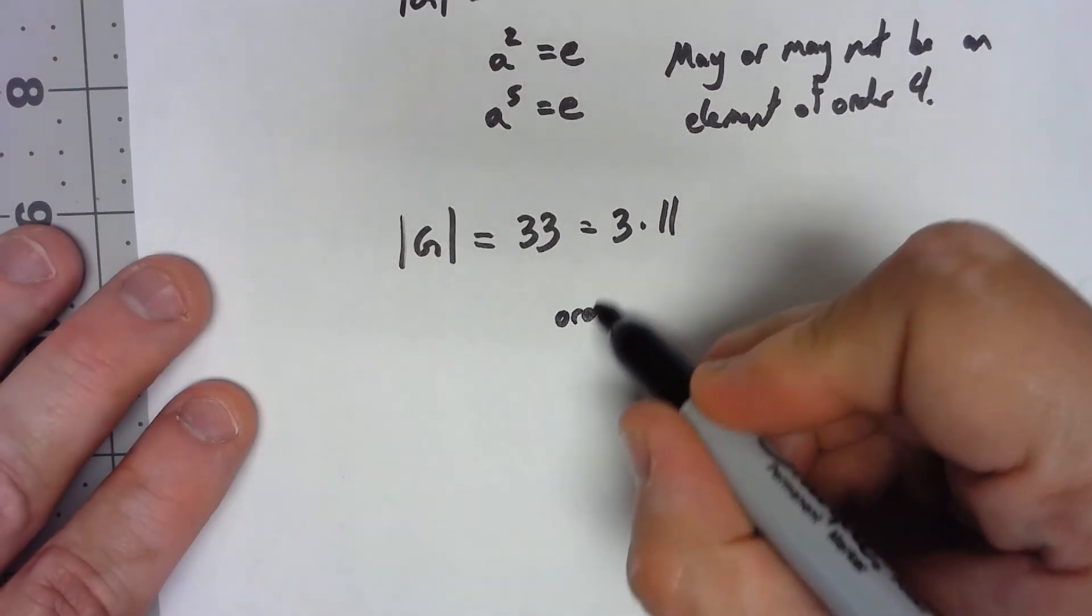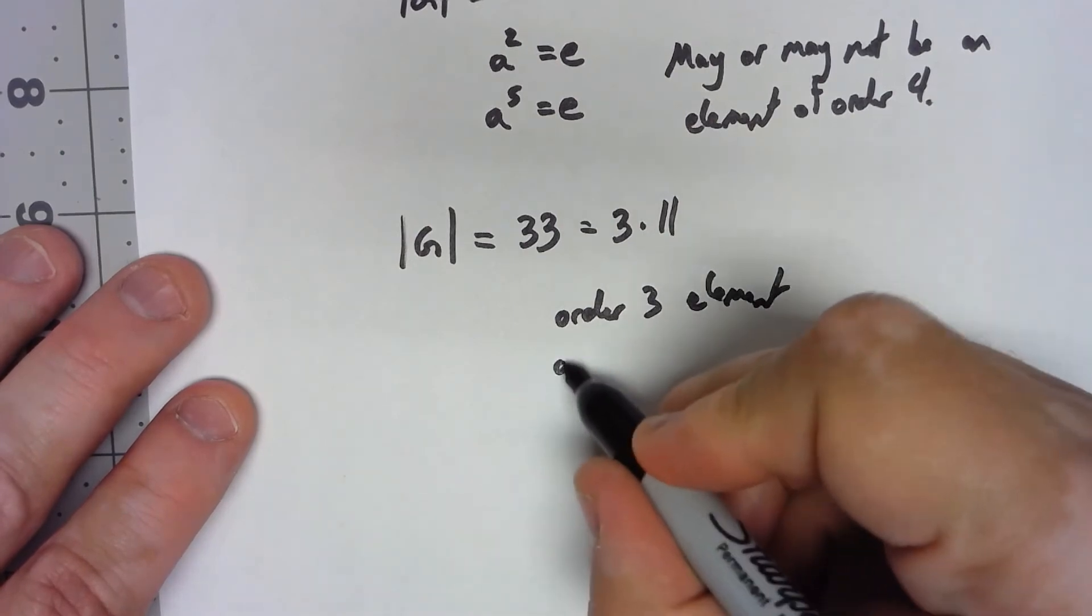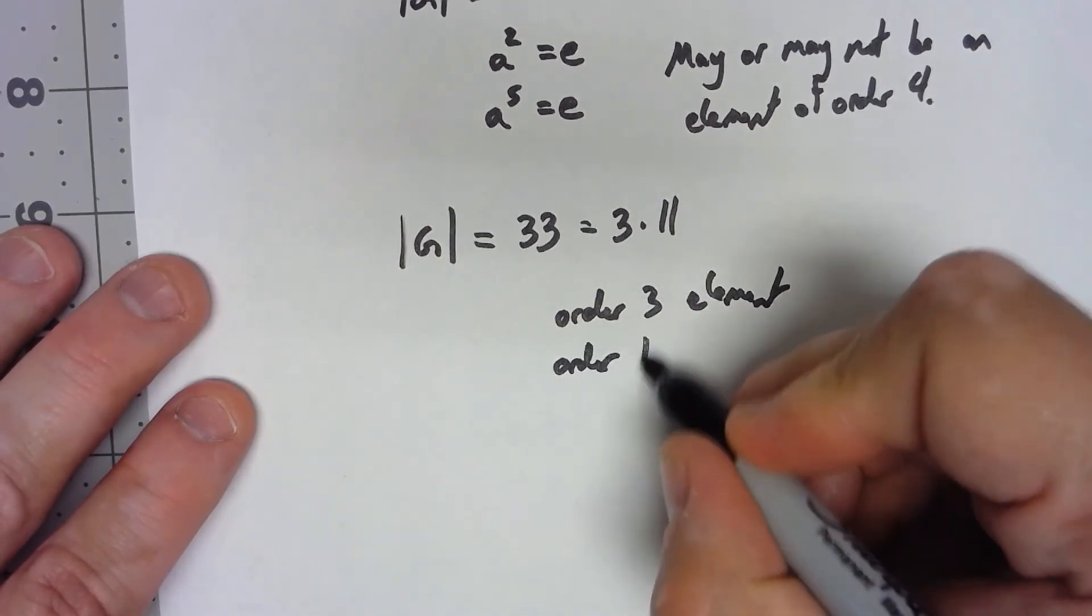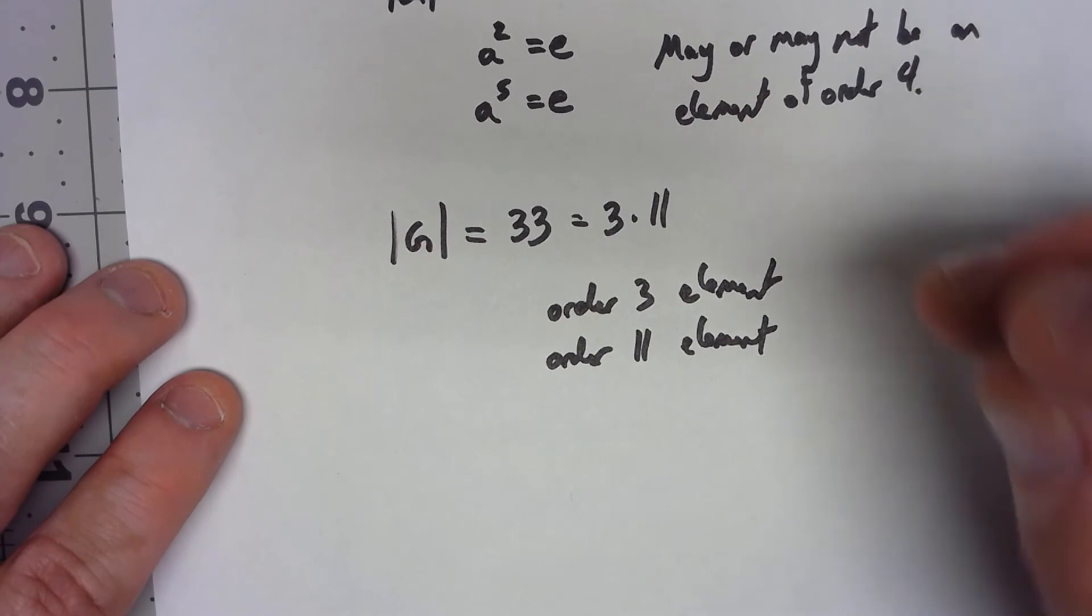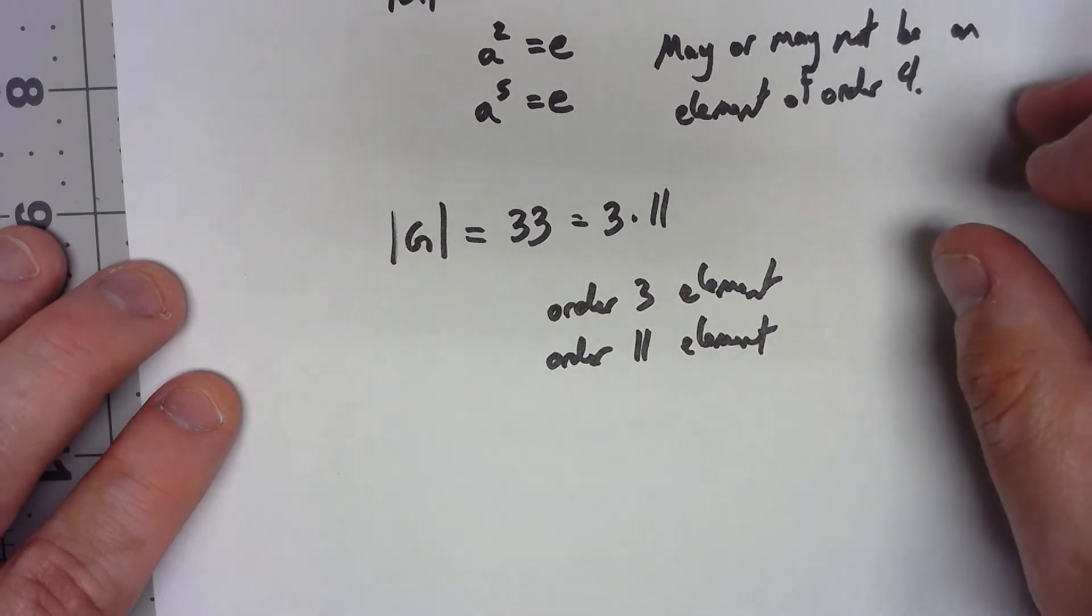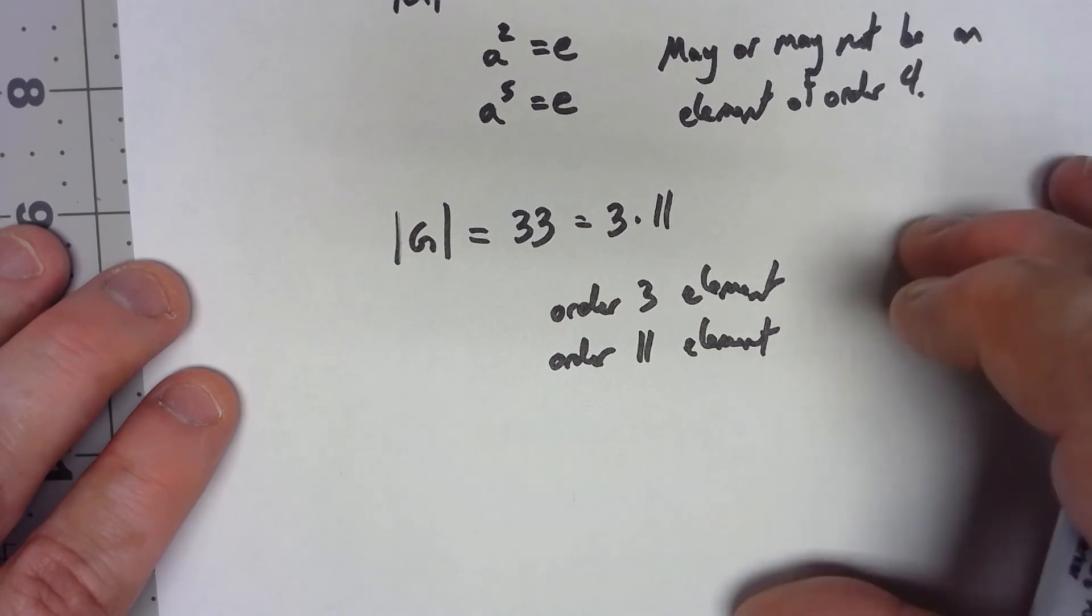We know we have an order 3 element. We know we have an order 11 element. We may or may not have an element of order 33. Now actually I think you're going to find out that we do in fact have an element of order 33.